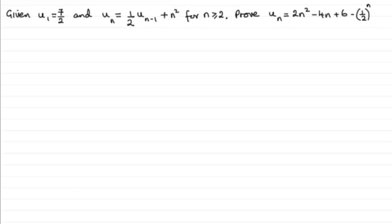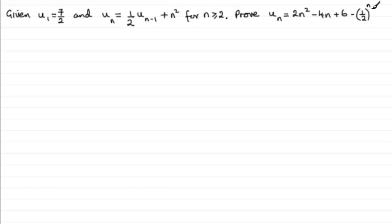This is another video in my series on proof by mathematical induction, where we're looking at proving the nth term in a recurrence relationship. I'm assuming you're familiar with recurrence relationships — if not, check them out on my website. For this example, we're given that the first term u₁ is equal to seven over two, and the nth term uₙ equals a half of uₙ₋₁ plus n squared, true for n ≥ 2. We need to prove that uₙ equals 2n² minus 4n plus 6 minus one-half to the power n.